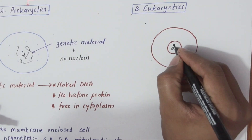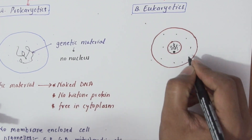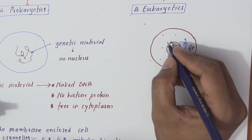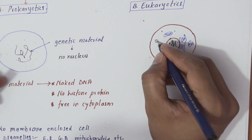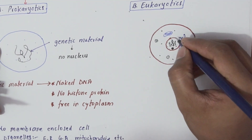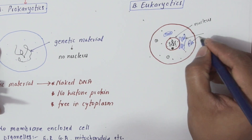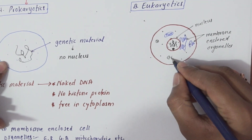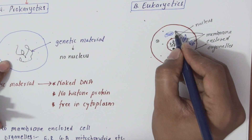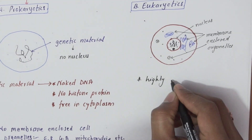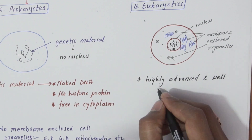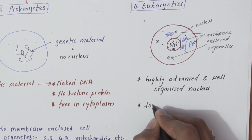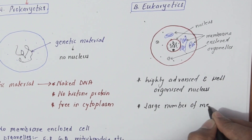Now we are drawing a diagrammatic representation of eukaryotic cells, which are definitely more well-developed than prokaryotic cells, with various organelles. This is the nucleus, and these are membrane-bounded organelles like endoplasmic reticulum, lysosome, and mitochondria. Eukaryotic cells have a highly advanced and well-organized nucleus.